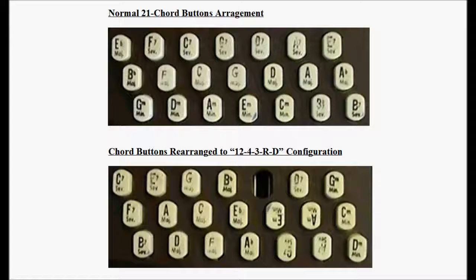The photograph at the top shows the normal 21 chord button arrangement found on the standard 21-chord button autoharp. In the top row we have the seventh chords arranged in ascending fifths: F major seventh, C major seventh, G major seventh. In the middle row, similarly arranged in ascending fifths, are the major chords: B flat major, F major, C major, and G major. In the bottom row we have the relative minor chords arranged in ascending fifths: G minor, D minor, A minor, and so forth.